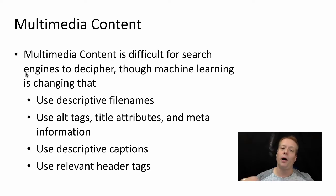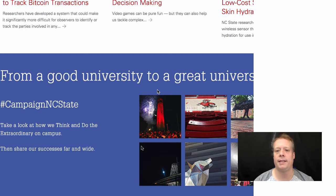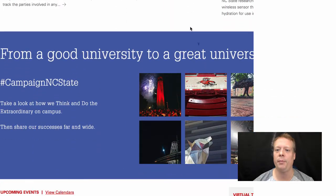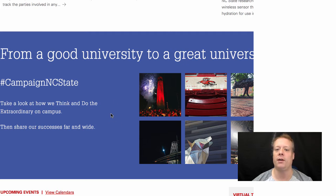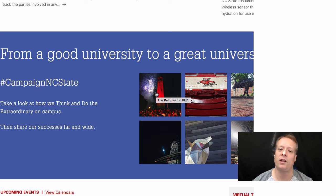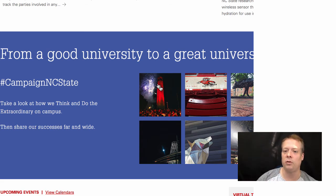I'm going to pause and show you an example of these on a real website. Here I am on the NC State University website — they have a bunch of different images. Obviously if someone types 'NC State' or 'think and do' they'll find this page easily. But what about 'red bell tower'? When I cursor over that image, it highlights the words 'the bell tower in red' — that's because in the code there's an alt tag, an alternative tag, which displays as a tooltip.